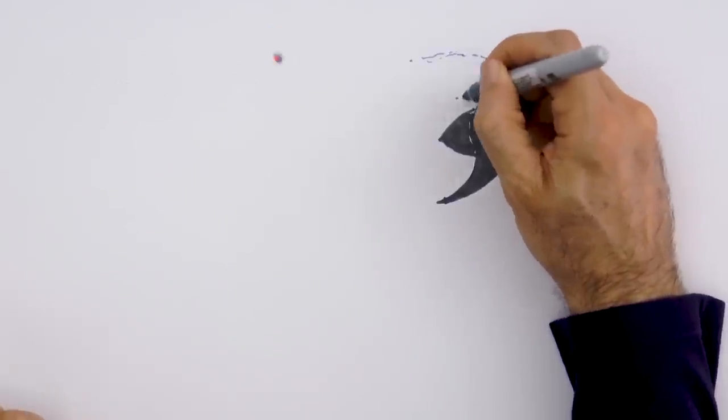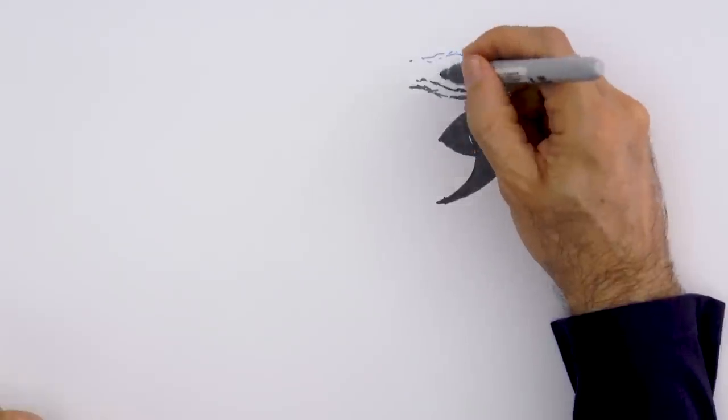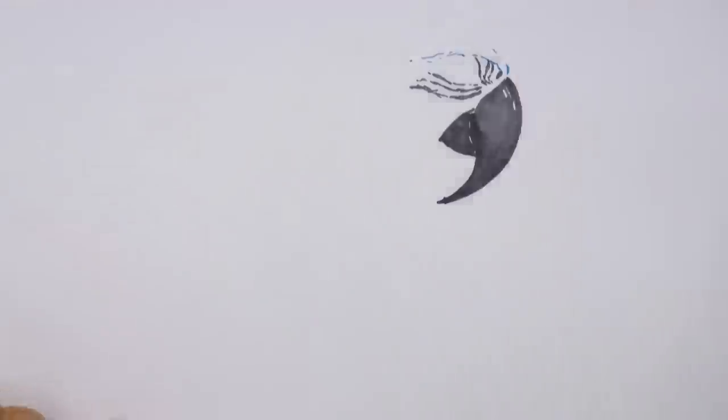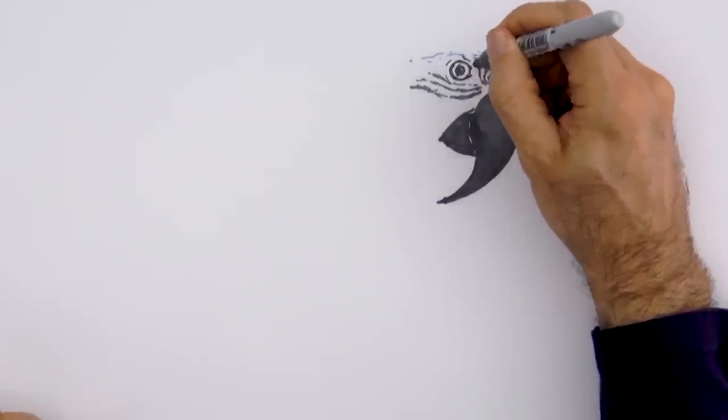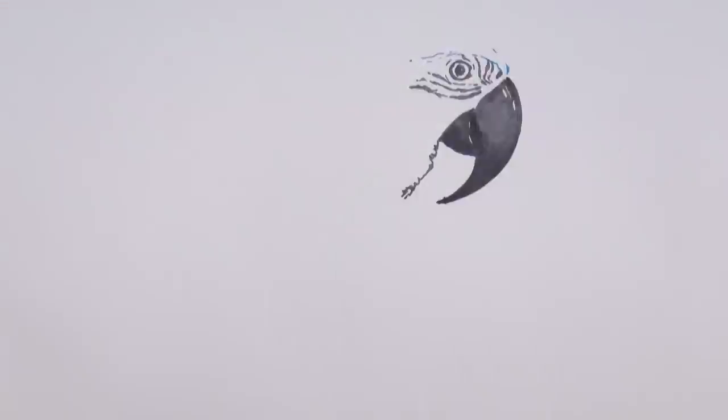This area of the face is very light, but it has some dark stripes, like this. And the eye should go here. Very good! I'll go over the dark areas of the beak, as I told you.